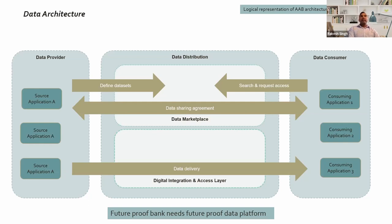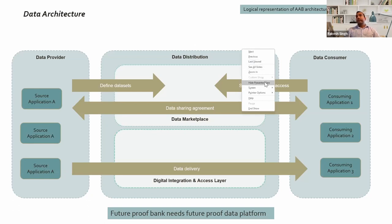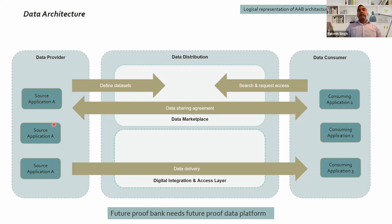Our data platform basically consists of three components. You have a data provider — sources sending data — which is basically normal. And then you want to share those data with the data consumer, which is basically applications. But before sharing, you have to do certain things. First, you need to ensure what data you want to share, which is called data sets. You want to define and make a glossary of all of it. And a consumer needs to know what they want to consume.